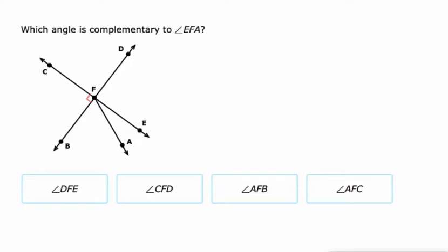Complementary. Remember, that means that they add up to 90 degrees. So EFA is this angle right here. Okay. So the only angle I know that's going to add up to 90 degrees with that would be this one right here. AFB or BFA. There it is. AFB.